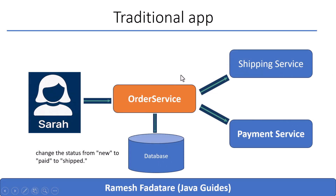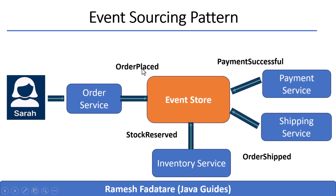In a traditional app, the order service might just update its database and change the status from new to paid to shipped. But in microservices with event sourcing, that's not how it works. Instead of each service saving just the final state, each one records events for every action it performs. These events are the source of truth.